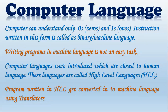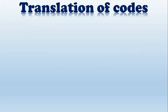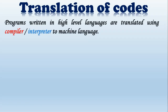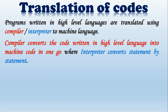So now we should know what translators are. Programs written in high level languages are translated using a compiler or interpreter to machine language. A compiler converts the code written in a high level language into machine code all at once — that is, it converts all the code into zeros and ones in one go. The interpreter, on the other hand, converts statement by statement. That is the difference between a compiler and an interpreter. Any language will use one of these.